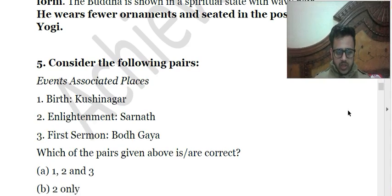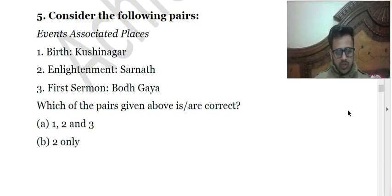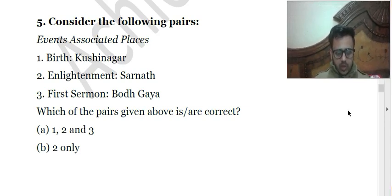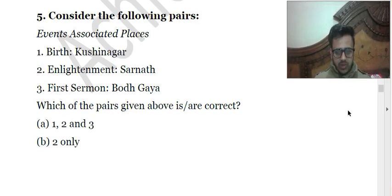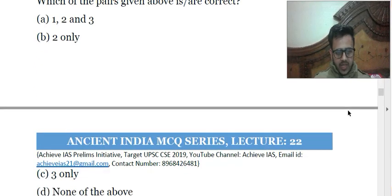The fifth question asks us to match events in Buddha's life with associated places: 1 - Birth: Kushinagar; 2 - Enlightenment: Sarnath; 3 - First sermon: Bodh Gaya. All of these are incorrectly matched. The birth of Lord Buddha took place in Lumbini (Nepal), not Kushinagar. He achieved Mahaparinirvana in Kushinagar. Enlightenment was in Bodh Gaya, and the first sermon was given in Sarnath. So nothing is correctly matched and the answer is D — none of the above.